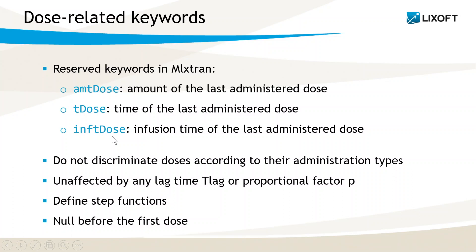These keywords can be used directly for some calculations in the structural model without requiring a regressor. However, when using them, you should keep in mind a few characteristics. First, they do not discriminate doses that correspond to different administration types, even when the dataset contains a column administration ID. Moreover, they contain direct information from the dataset. Thus, even if you define some absorption characteristic in PK macros, such as a lag time or a proportional factor, they do not affect the values written by these keywords.